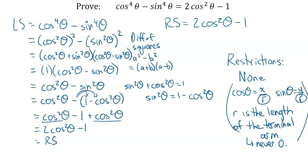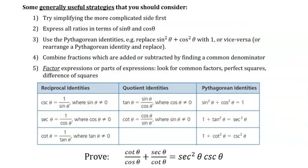Let's look at the third and final example. The strategies: we'll simplify the more complicated side first, which is the left side. We'll express ratios in terms of sine and cosine, but we'll do that later. The Pythagorean identities may come up. And combining fractions by finding a common denominator — that's actually the first thing we're going to do. There will be no factoring, but those are the three strategies we'll use.